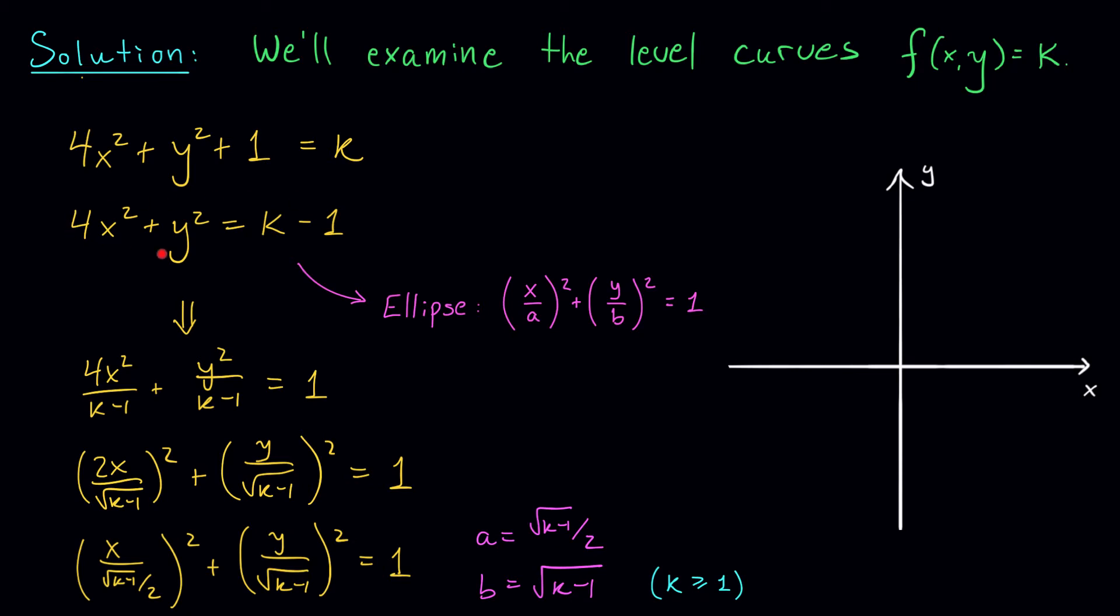In fact, we can see this in our original equation as well. The left-hand side, 4x² + y², is a sum of squared terms. So this side is definitely non-negative.